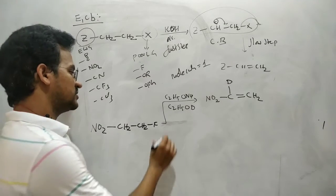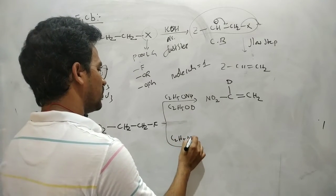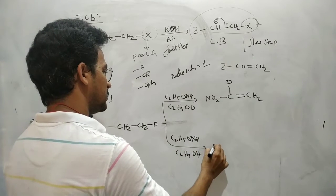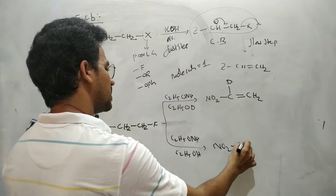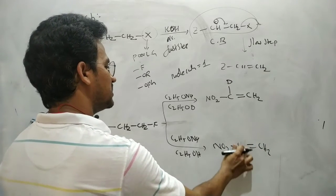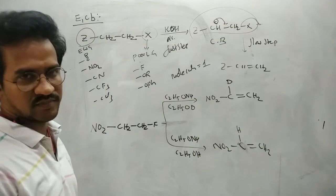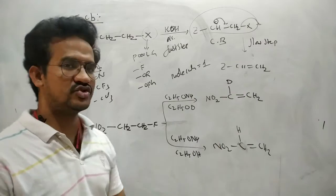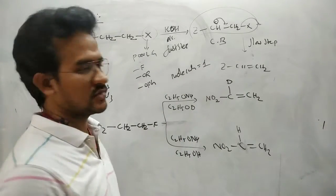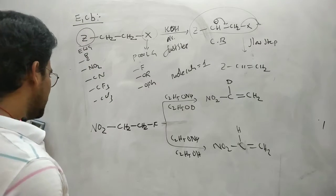For comparison, if you use C2H5ONa and C2H5OH (non-deuterated), the E1CB reaction still occurs, but in the product the hydrogen is retained — hydrogen remains the same. However, when you use the deuterium solvent, the hydrogen is replaced by deuterium. Let us see how hydrogen is replaced by deuterium.